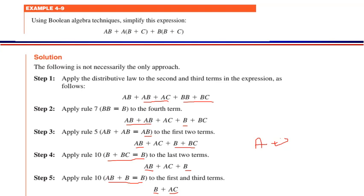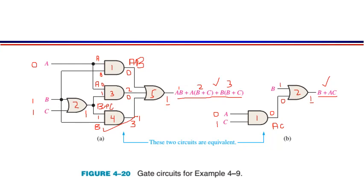Is tarah hum ne ek complex expression jo given thi usse simplify kiya with the help of these rules jo hum previous lecture mein discuss kar chuke hain. In hi rules ko apply karte hue hum ne ek complex expression ko simplified/reduced form mein likha. Ab is figure mein hum dono expressions ko in the form of logic gates represent kar rahe hain. Jo main expression given thi woh thi: AB + A(B+C) + B(B+C), aur jo simplified term aayi woh hai: B + AC.